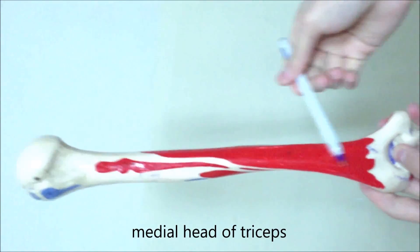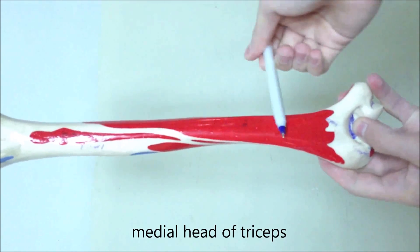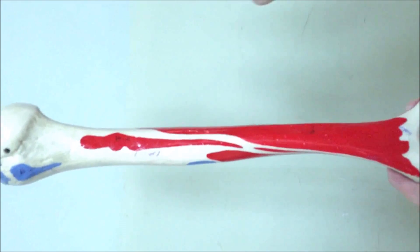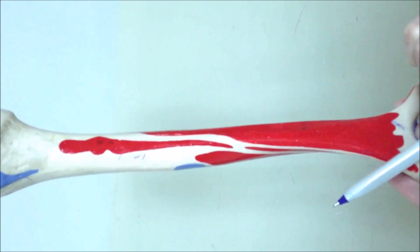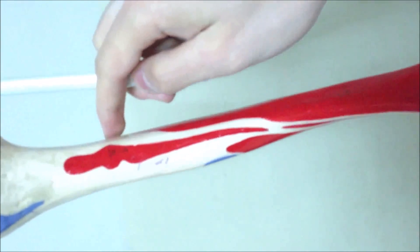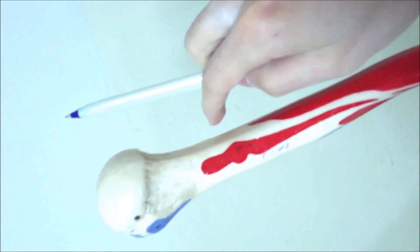Medial head of triceps. Lateral head of triceps. Inserts into the infraglenoid tubercle of the scapula.